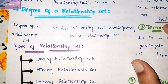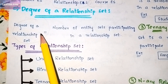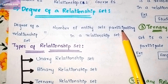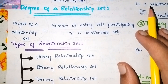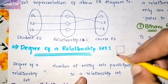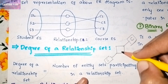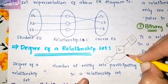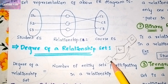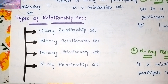The degree of a relationship set can be defined as the number of entity sets participating in a relationship set. In the above example, there is a relationship between the student entity and the course entity. Since there are two entities participating, the degree of the relationship set is two.